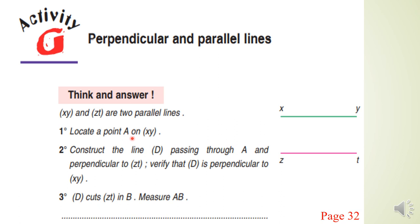Locate a point A on (xy). We have to put the point A on the line (xy). I will put it here. Construct the line (D) passing through A and perpendicular to (zt). We have to draw the line (D) passing through A and perpendicular to (zt).